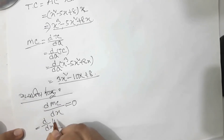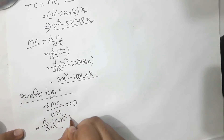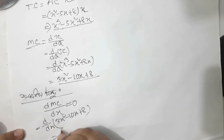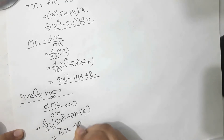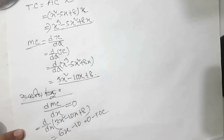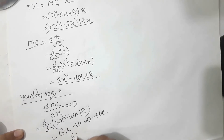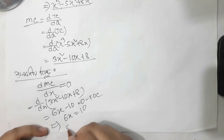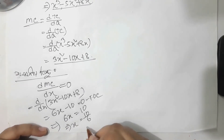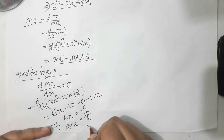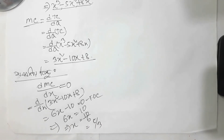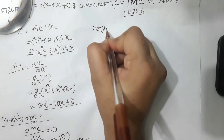We will have 3x squared minus 10x plus 8. We will have 6x minus 10 equal to 0. Let me show you what you need. We'll continue — x equals about 10, we'll be about 5, we'll be about 3.